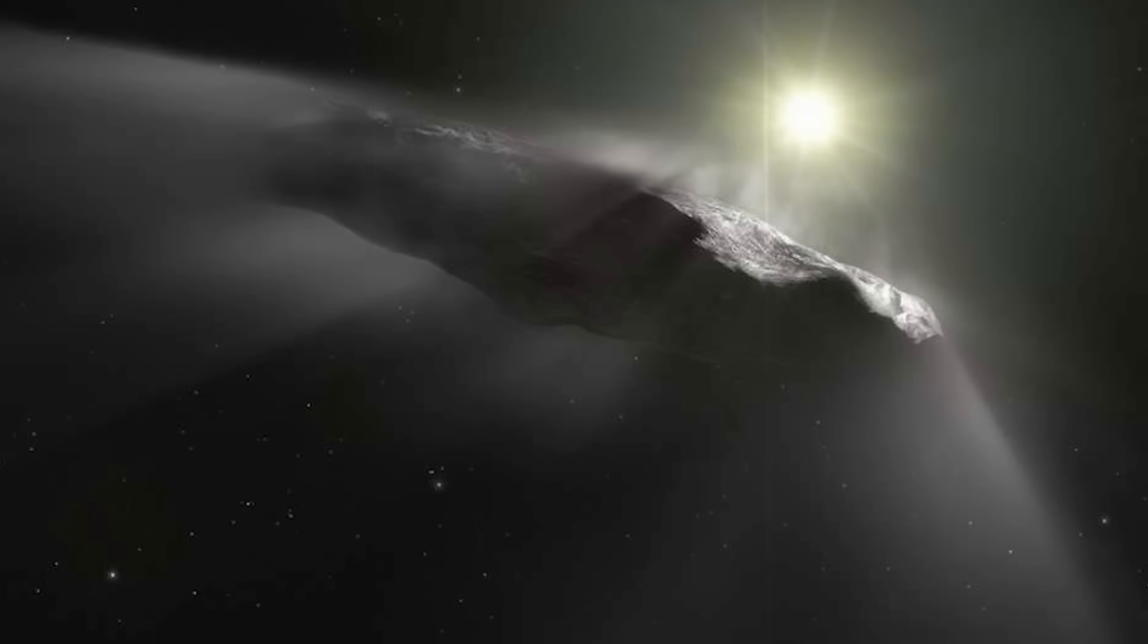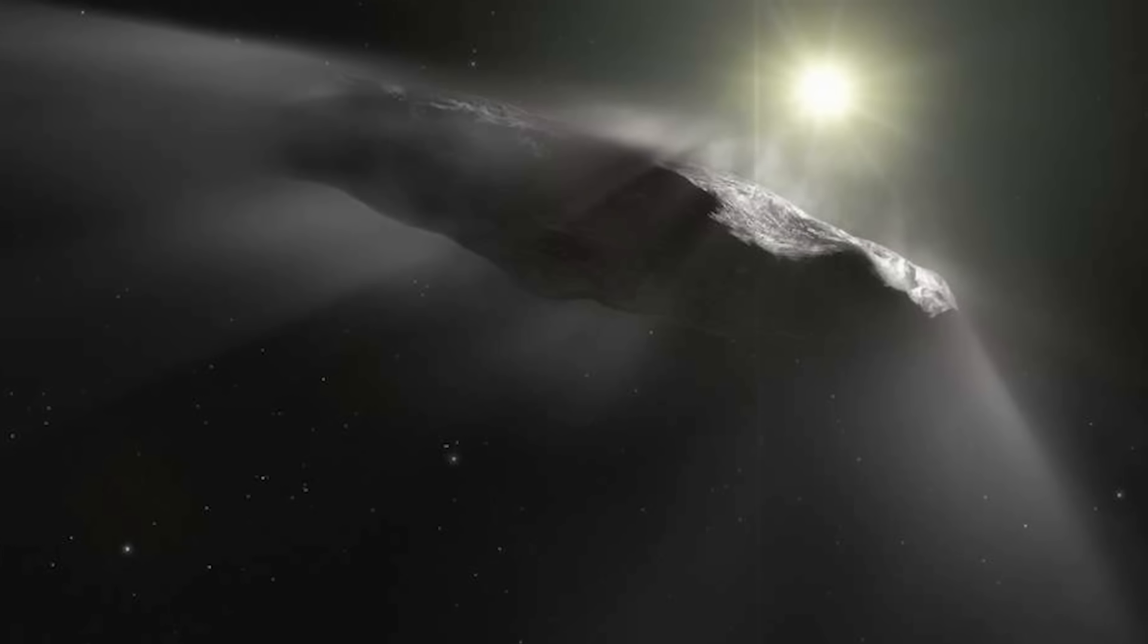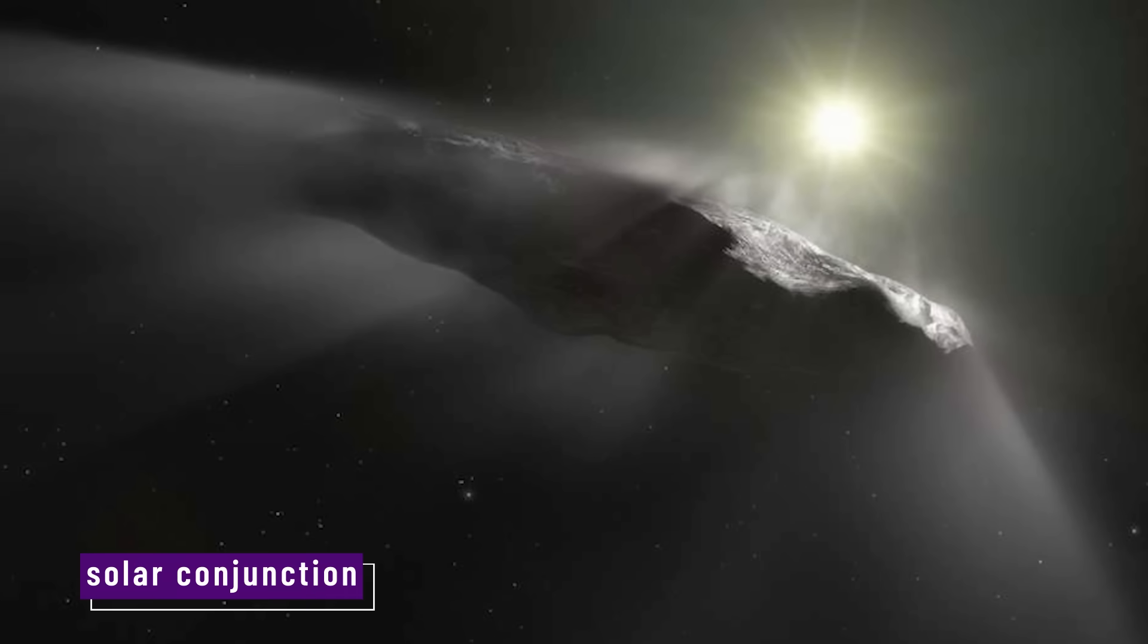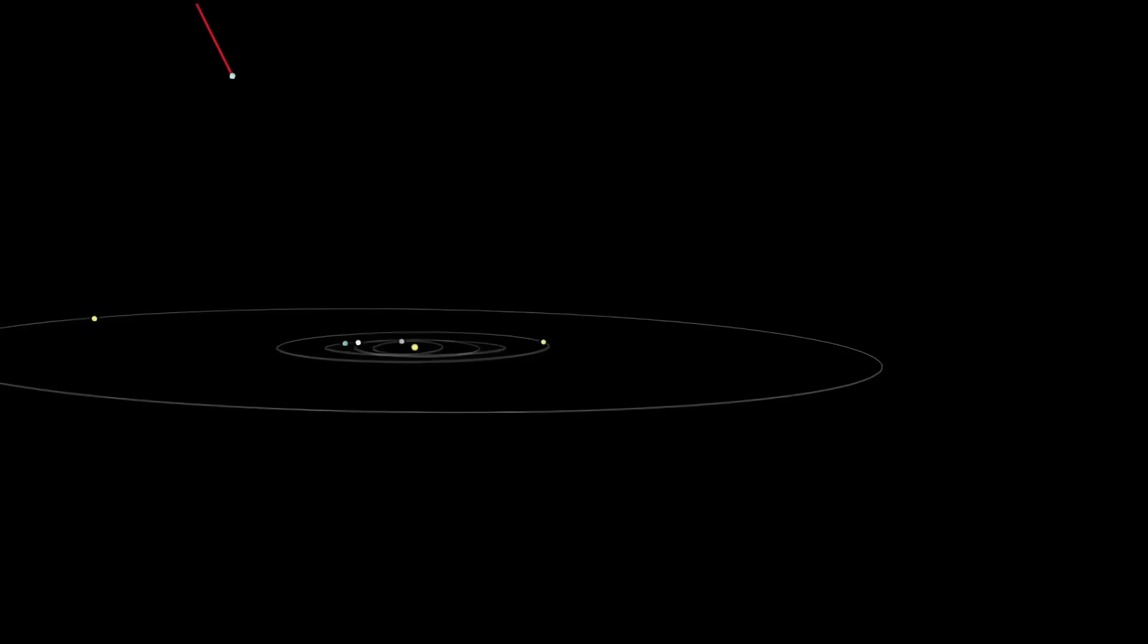During this time, telescopes won't be able to see it. Signals will be blocked. Radar will be useless. The object will enter a window of silence. It's called solar conjunction. And it happens when an object lines up behind the sun.